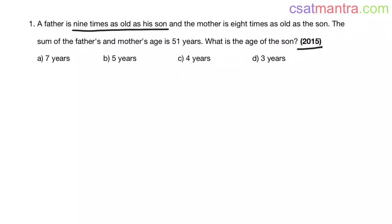So let's call the father's age as f and the son's age as s. So father is nine times as old as his son, and the mother is eight times as old as the son.